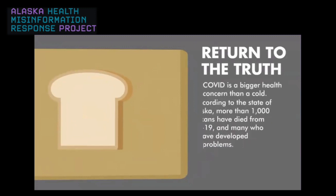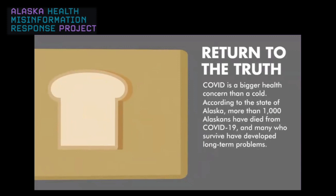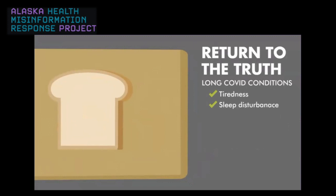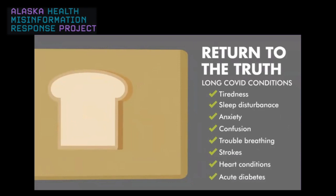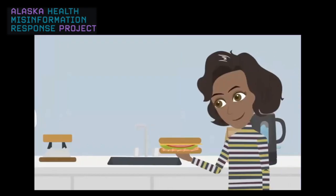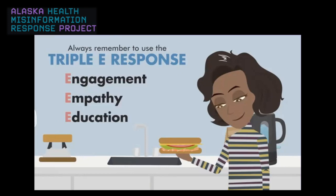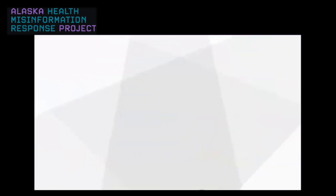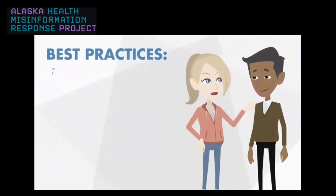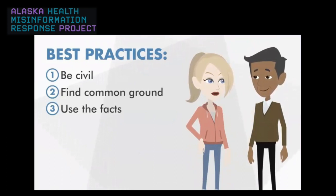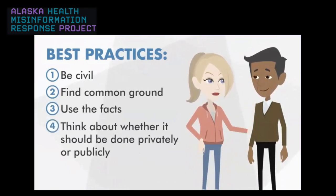COVID is a bigger health concern than a cold. According to the state of Alaska, more than 1,000 Alaskans have died from COVID-19, and many who survive have developed long-term problems. Long COVID conditions include tiredness, sleep disturbance, anxiety, confusion, trouble breathing, strokes, heart conditions, and acute diabetes. When using a truth sandwich, always remember to use the triple E response: engagement with empathy and education. Think about how the other person might feel. For more effective conversations, best practices include being civil, finding common ground, using the facts, thinking about whether to respond privately or publicly, and most of all, being patient.